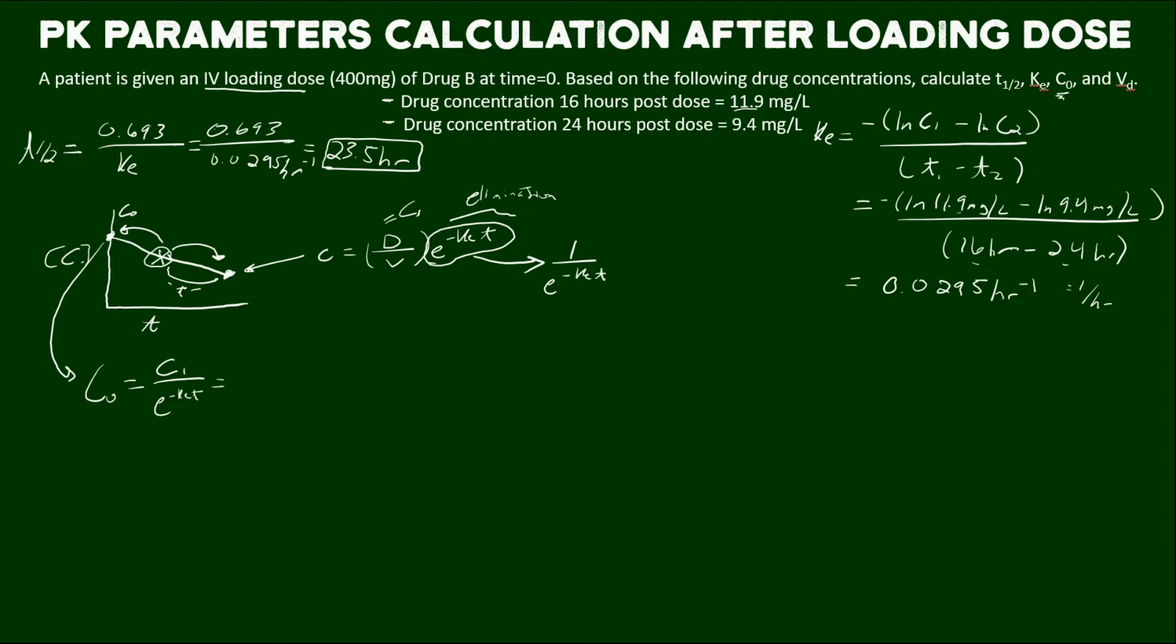For our problem here, we're going to plug in C1 with T1 to calculate the initial concentration after the loading dose. When we do this math, we get 19.1 milligrams per liter. So we can do a check: is this concentration higher than the C1 we put in there? Yep. So it looks like it worked. It actually added concentration back on to get us to C0.